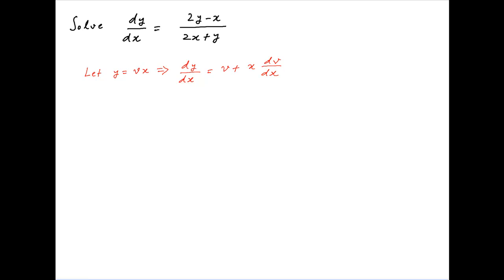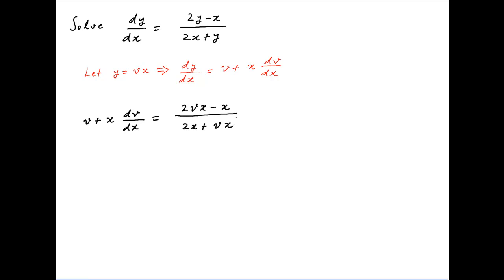Therefore the given differential equation becomes v plus x times dv upon dx is equal to 2vx minus x upon 2x plus vx.